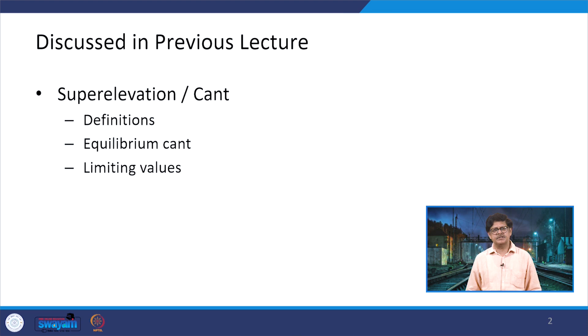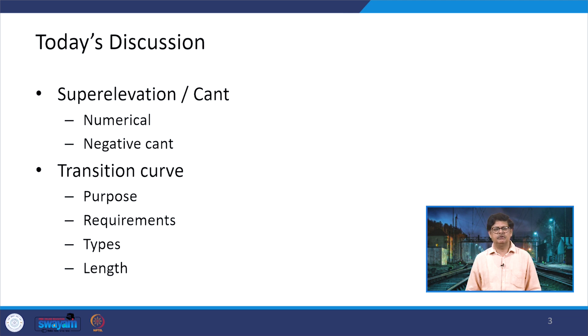Dear students and participants of the course on Railway Engineering, in this lecture we will be continuing with super elevation on tracks and then shift our discussion to transition curves. In the previous lecture we discussed super elevation, also termed as cant, including equilibrium cant, cant deficiency, cant excess, limiting values, and numericals to find super elevation and maximum permissible speeds. Today we will see a few more numericals along with negative cant, and then move to transition curves.